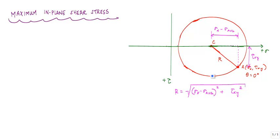And in fact, the coordinate for this is sigma average, comma, tau max, or tau right here. And this is a distance r, the radius. And as you can imagine, tau max is equal to the radius.